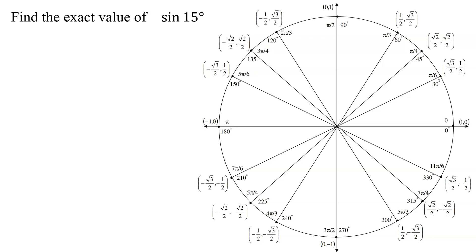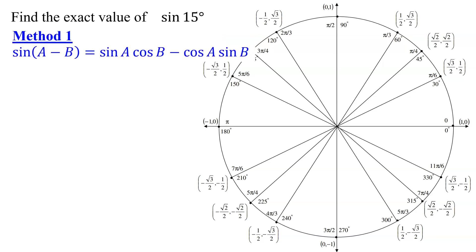There are several different ways of doing this problem. I'm just going to show you two of them. The first method uses the angle difference identity for the sine function, that says the sine of A minus B equals the sine of A times the cosine of B minus the cosine of A times the sine of B.